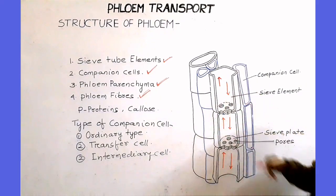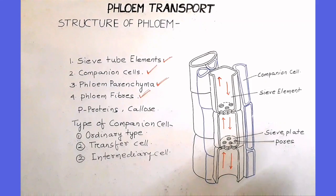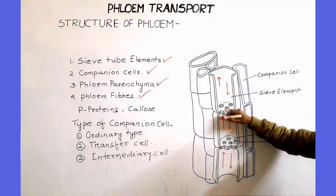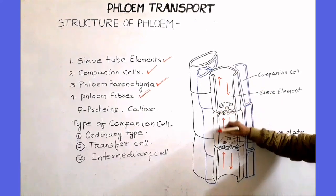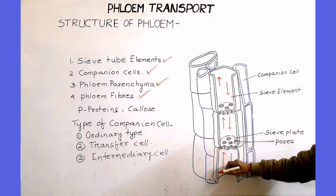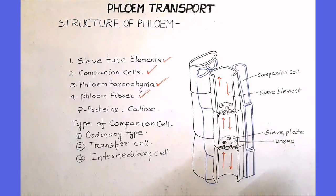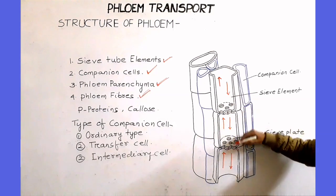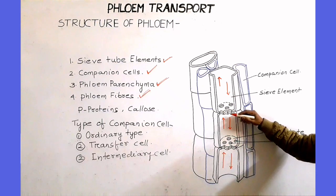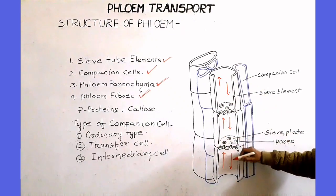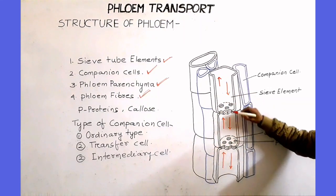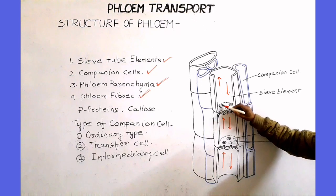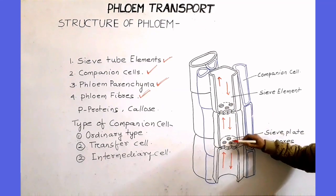This figure explains the structure of phloem. These are the sieve tube elements — here is one sieve tube element, and here are adjacent sieve tube elements connected end-to-end to form a sieve tube. These adjacent sieve tube elements are separated by a porous sieve plate. These are the pores present in the sieve plate.